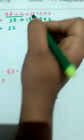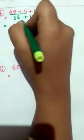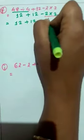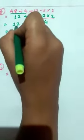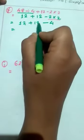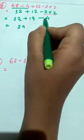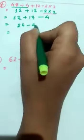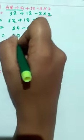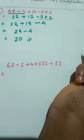After the division, we do the multiplication work: 2 into 2 is 4. Now we do the addition: 12 plus 12 is 24. Then we subtract: 24 minus 4 — 4 minus 4 is 0, and 2 remains — so the result is 20. I hope you have understood this one.